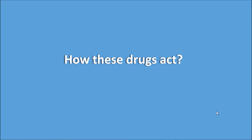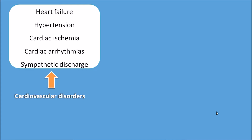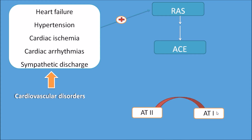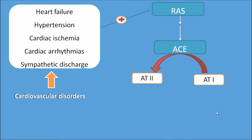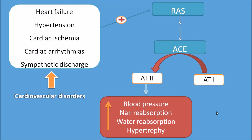How do these drugs act and how are they related with dry cough? Cardiovascular disorders like heart failure, hypertension, cardiac ischemia, cardiac arrhythmias, and even sympathetic discharge all cause stimulation of the renin-angiotensin system. This stimulated renin-angiotensin system then releases one of the key enzymes, ACE — angiotensin converting enzyme. This enzyme converts angiotensin 1 to angiotensin 2, which is a potent vasoconstrictor that increases blood pressure, causes sodium reabsorption, water reabsorption, as well as hypertrophy of the vascular smooth muscle.